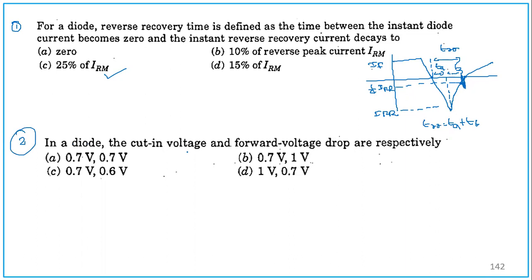Moving to the second question. In a diode, the cut-in voltage and forward voltage drop. You might know the characteristic of a diode, the IV characteristic. What will be the IV characteristic? Current will be there, voltage will be there. The characteristic will be somewhat like this. Silicon or germanium, whatever you take. This will be 0.7V, that is the cut-in voltage, and forward voltage drop will be 1V. Option B. Cut-in voltage is 0.7V, forward voltage drop is 1V.